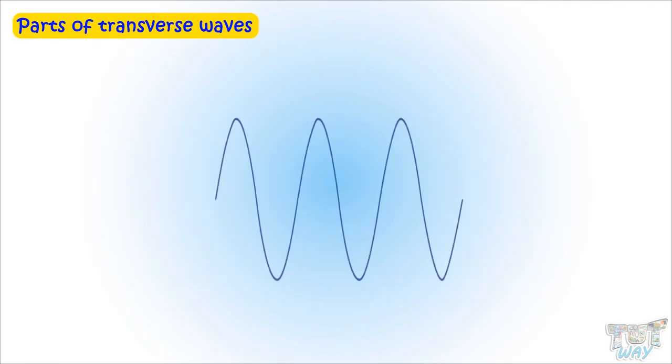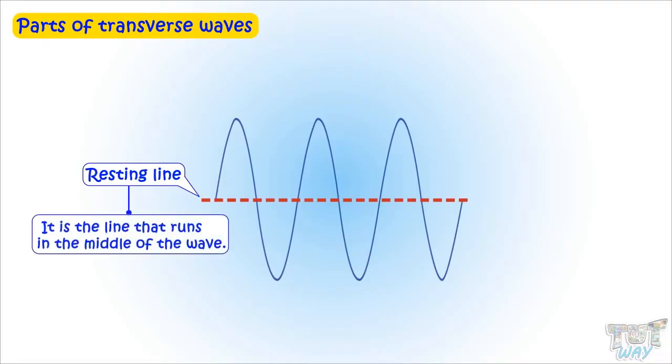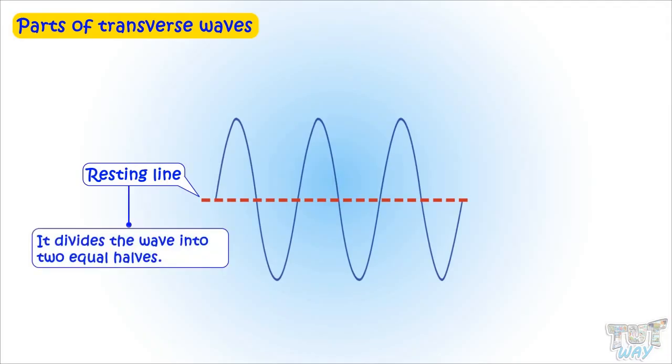First is the resting point. It is the line that runs in the middle of the wave. It divides the wave into two equal halves.